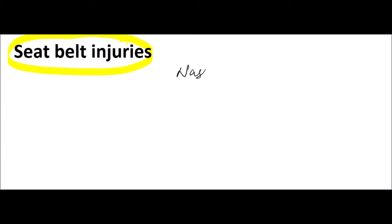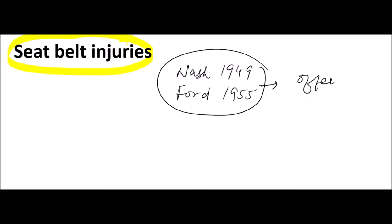Hello everyone and welcome to Forensic Extract. Today we will be discussing seat belt injuries. Seat belts are an essential element of all motor vehicles as well as various aircraft. The American car manufacturer Nash in 1949 and Ford in 1955 were the first companies to offer seat belts to their customers.